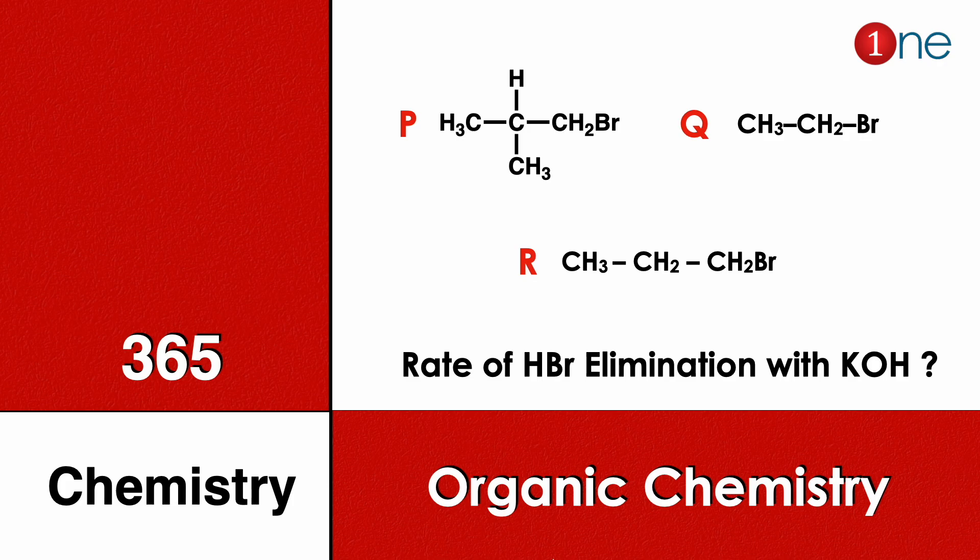Welcome to One Chemistry. This is the 365 Chemistry series — organic chemistry questions for you. Here you have three different bromides: the first one is bromine with a tertiary carbon, the second one is ethyl bromide, and the third one is propyl bromide. You have to find the rate of HBr elimination with the base.